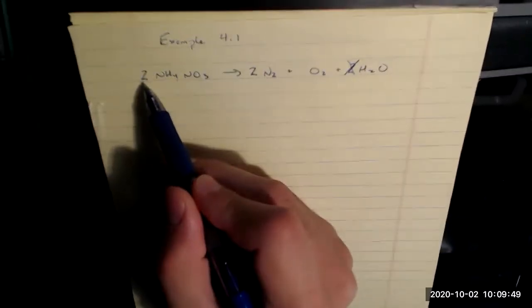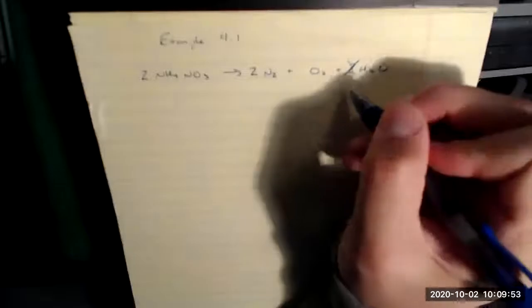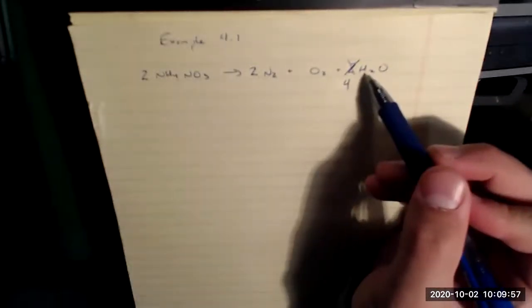Subscript of four times the coefficient of two is eight hydrogens. So I need to put now a coefficient of four over here in front of water, four times two is eight.